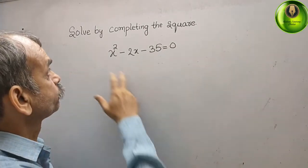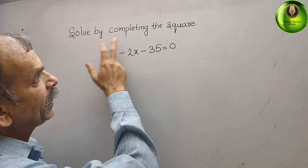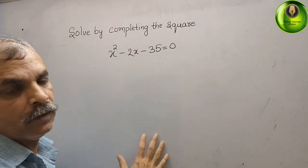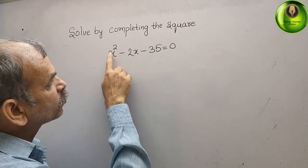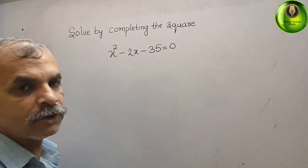Your question is, solve by completing the square. What they have given: x square minus 2x minus 35 that gives you 0.